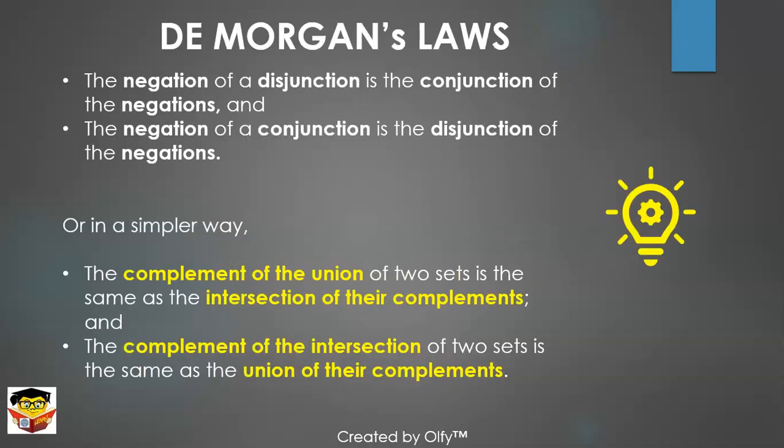DeMorgan's laws in English state that the negation of a disjunction is the conjunction of the negations. The second law states that the negation of a conjunction is the disjunction of the negations. It sounds a bit complex when put in this format.